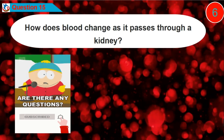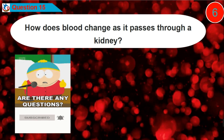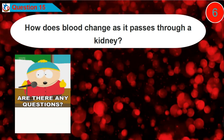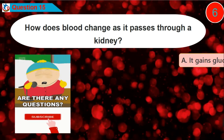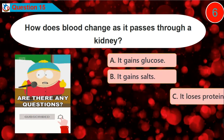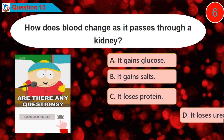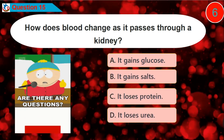Question 15. How does blood change as it passes through a kidney? Is it option A, B, C, or D?